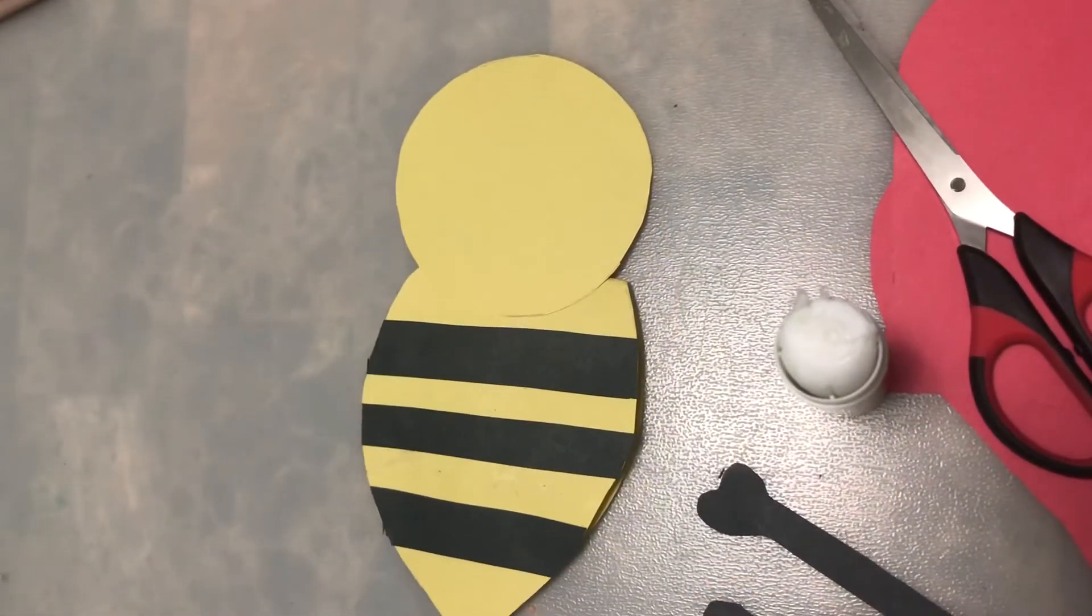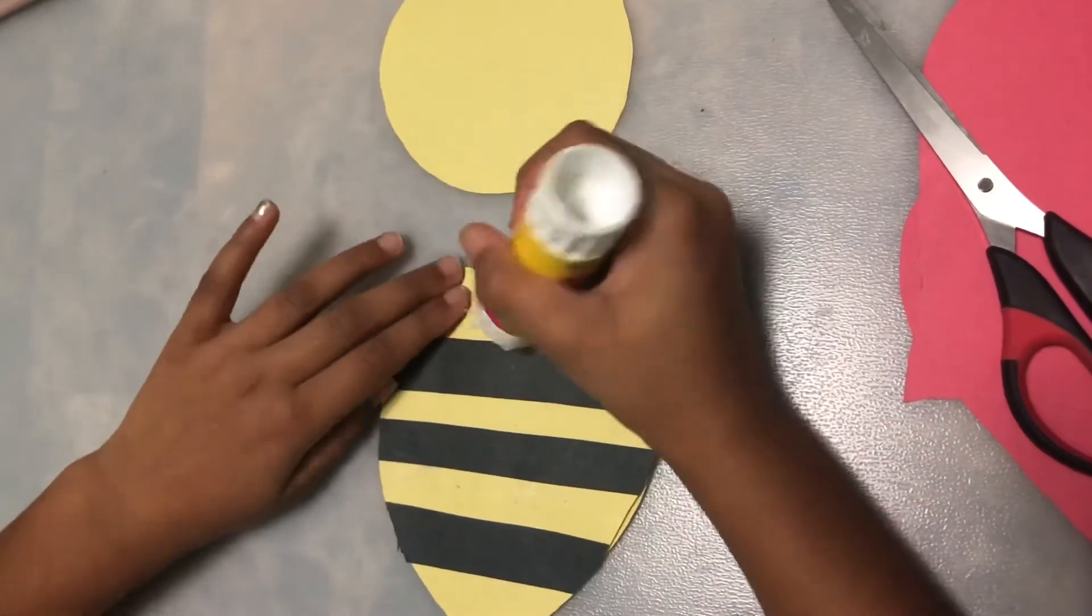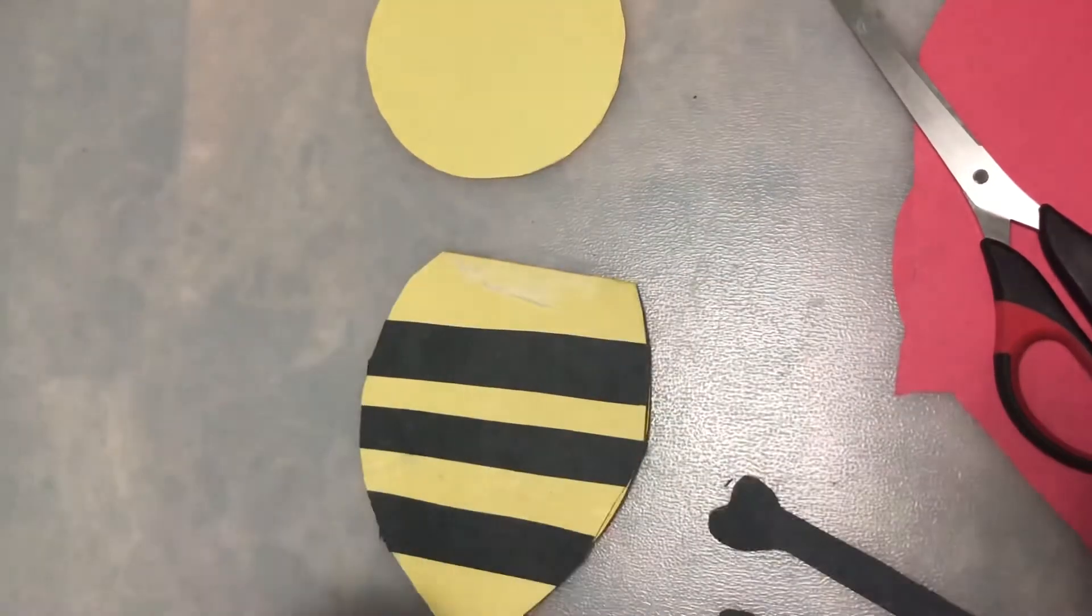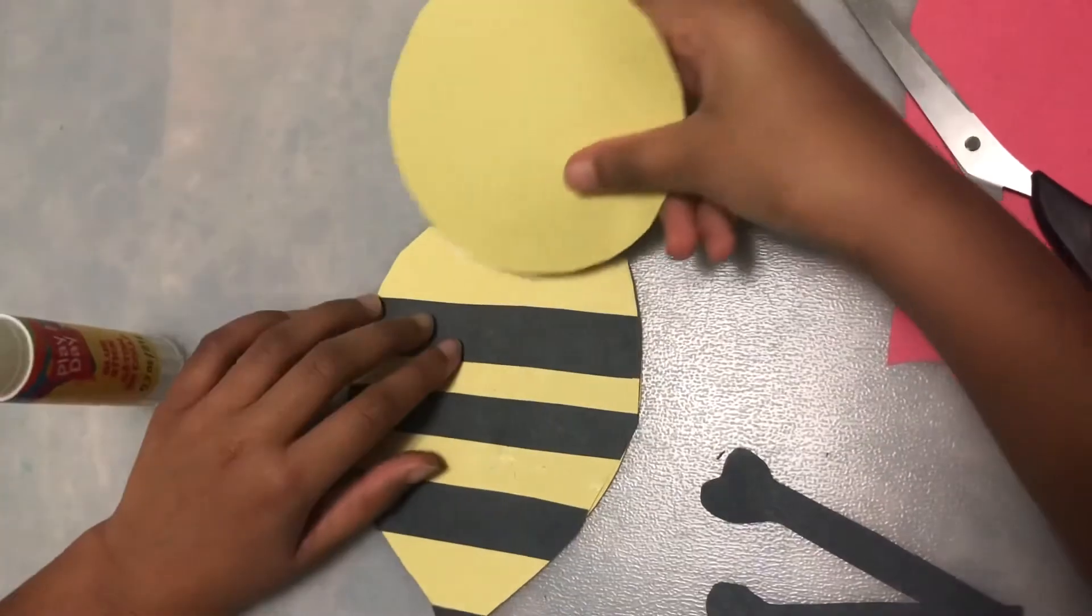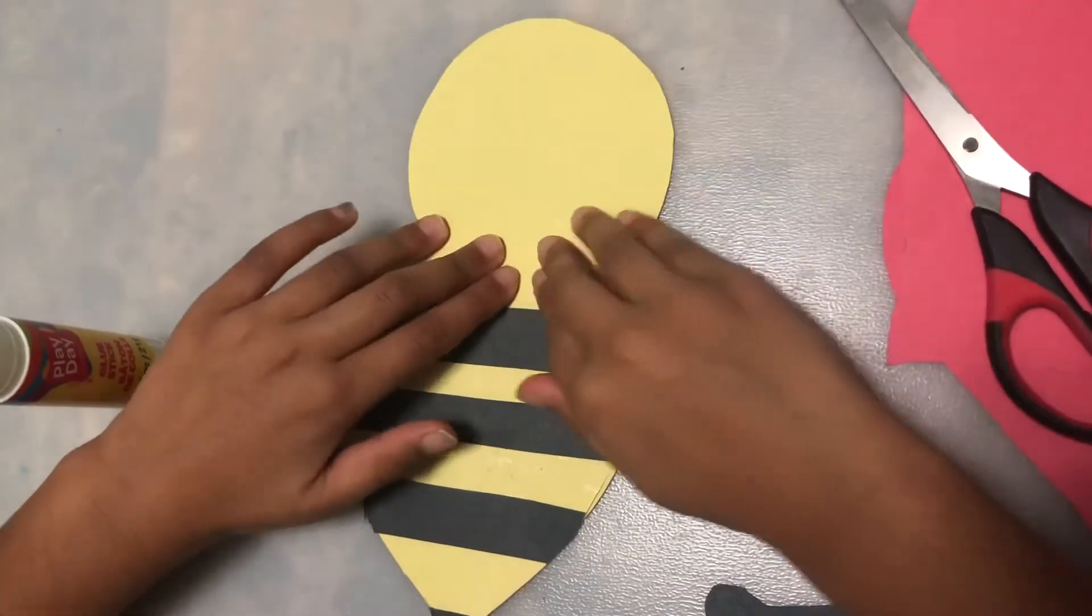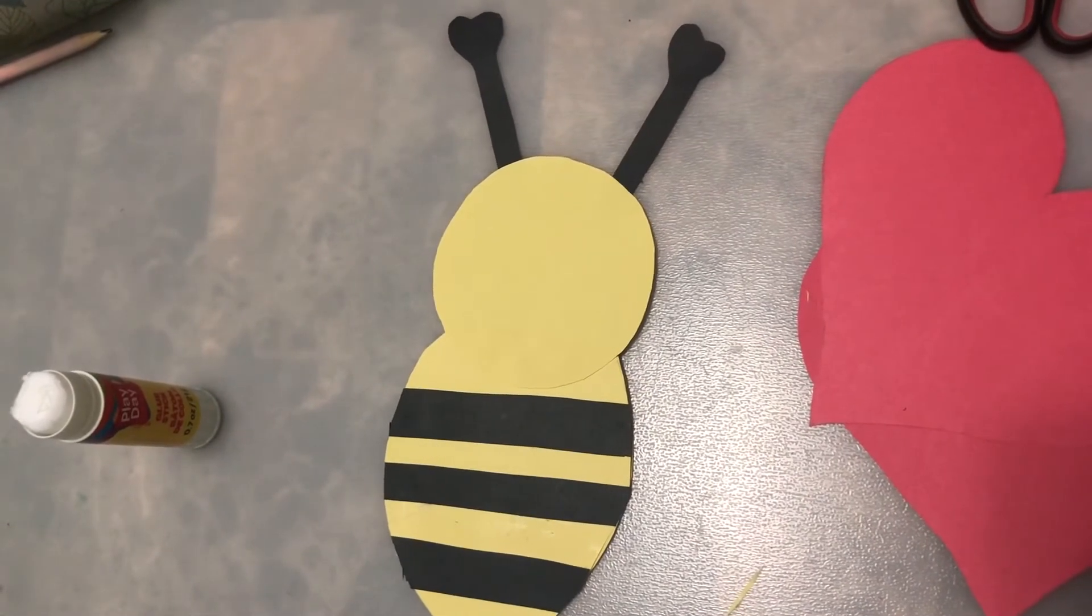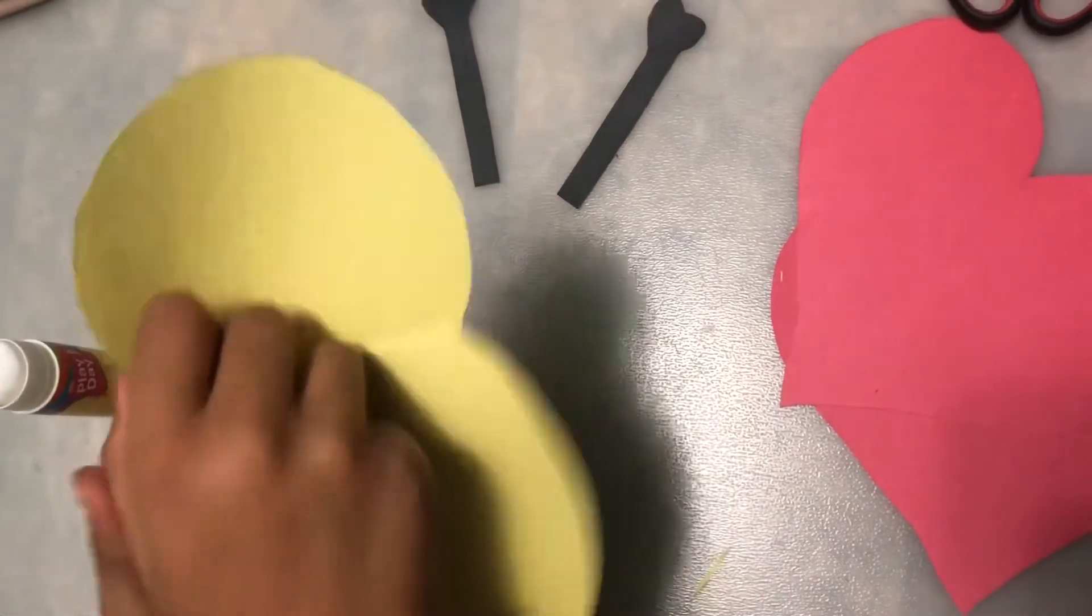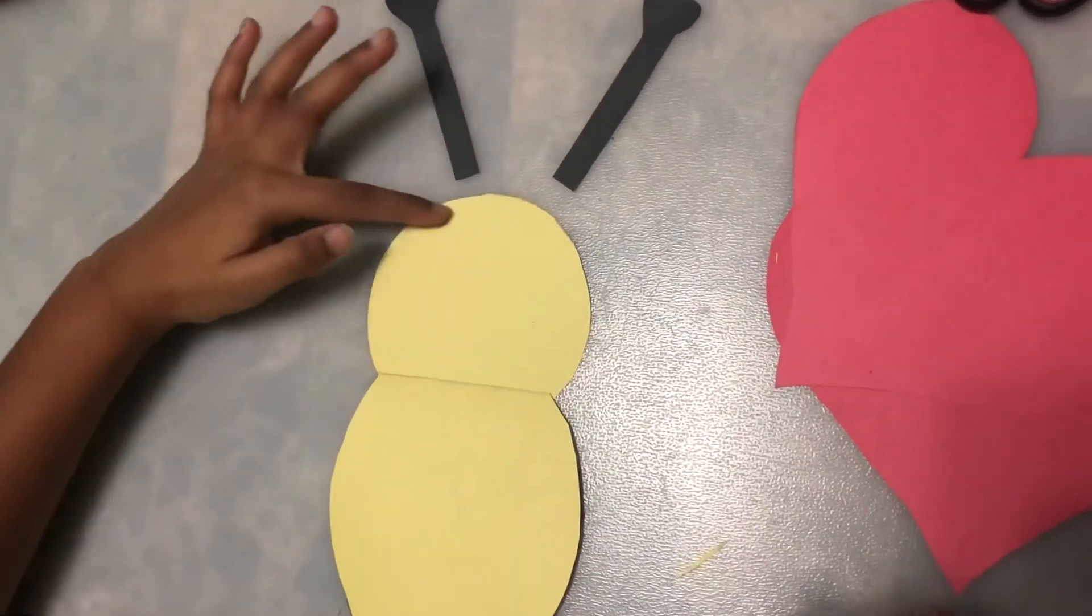Now we're gonna make the face so we're gonna put a little glue right here and glue our face on like that. Now we're gonna put the antennas so we're gonna turn around our body for our bee and we're gonna put a little glue right here.